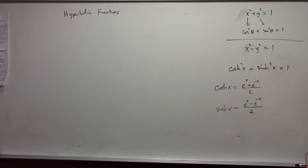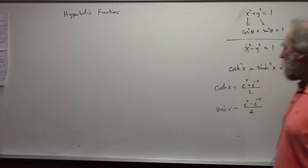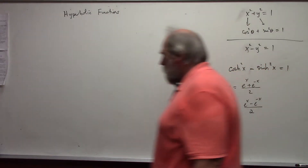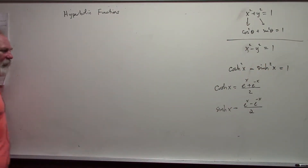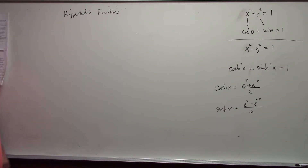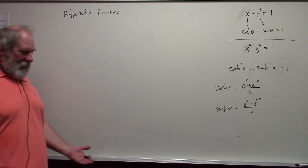If you substitute those in, you would get the result — it works out to be 1. The other trig functions are defined in terms of sine and cosine, and similarly the other hyperbolic trig functions are defined in terms of sinh and cosh.